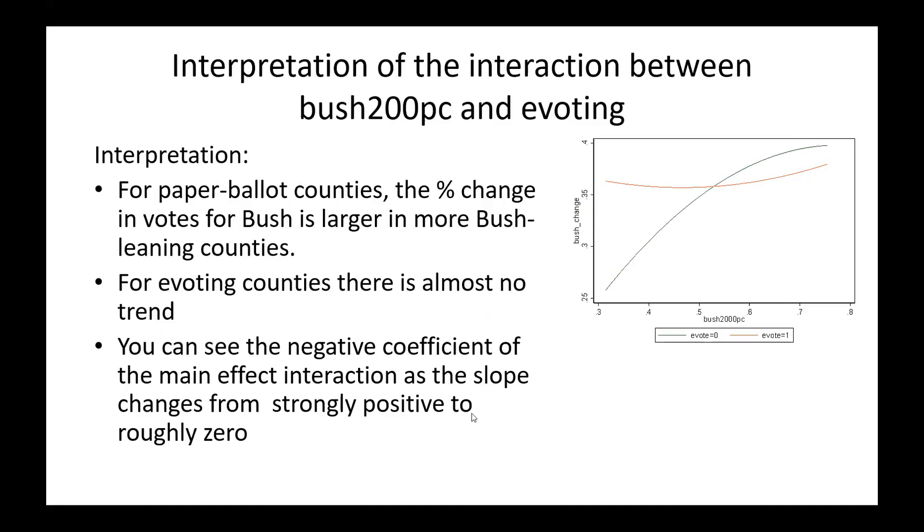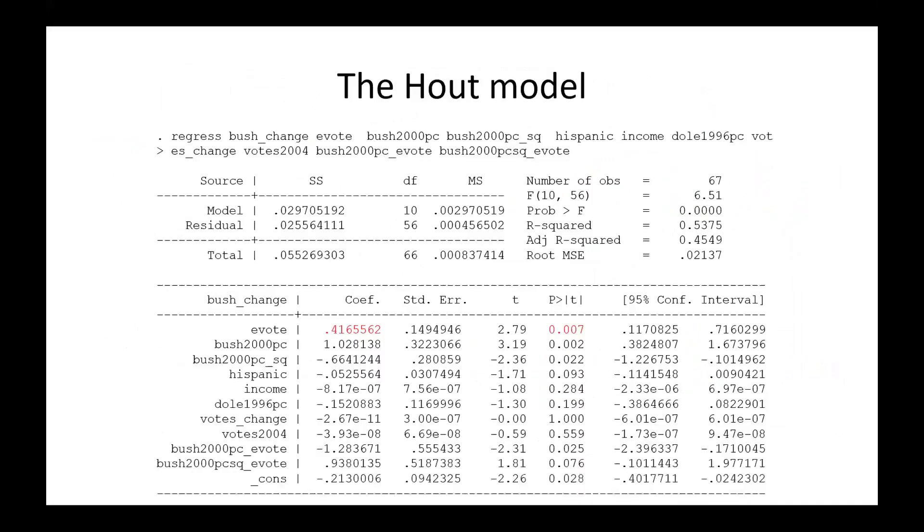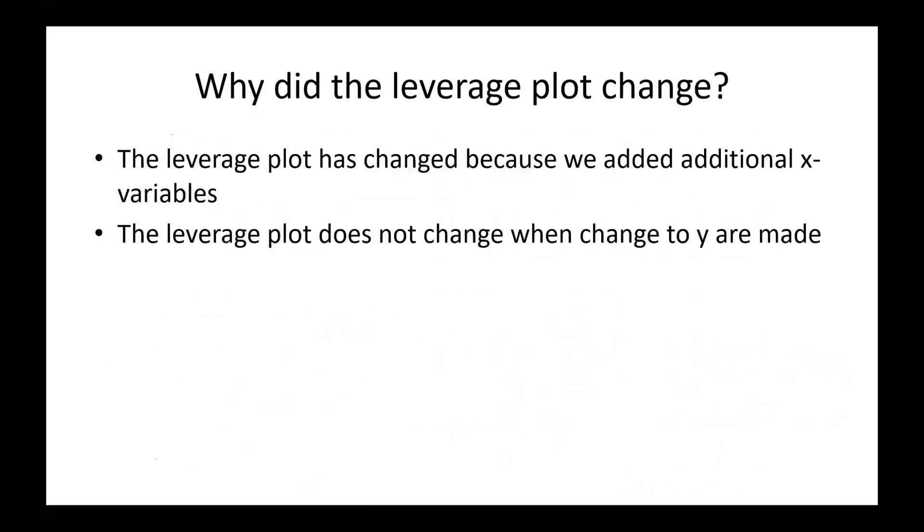I'm going to flip back five, six slides to look at the model, see whether that's true. We are looking at the linear effect, right? The linear interaction, not the quadratic one. And in fact, we see a negative value that's completely consistent with what I just said. It's a drop from a positive slope to roughly a zero slope.